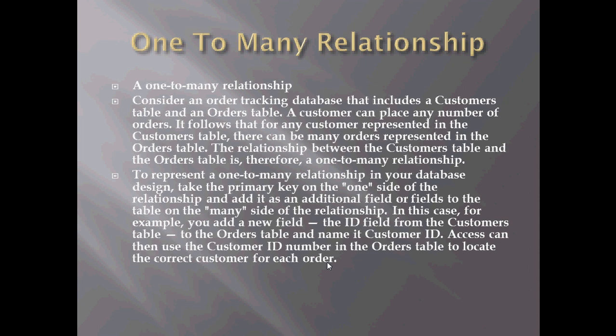It says, consider an order tracking database that includes a customers table and an orders table — we have both of those in the database we're using. A customer can place any number of orders. It follows that for any customer represented in the customers table, there can be many orders represented in the orders table. So one customer might have ten orders — that one customer is tied to ten orders, but one order isn't tied to more than one customer. This is an example of a one-to-many relationship.